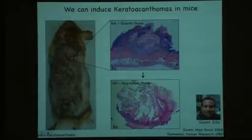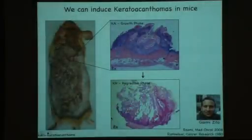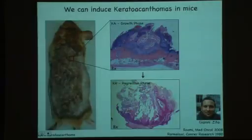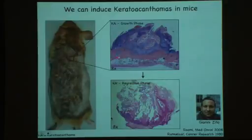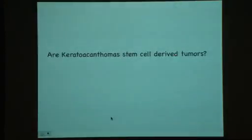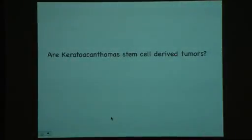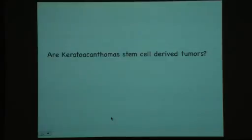Johnny has made a major effort as a postdoc in the lab setting up this cancer model. He uses a carcinogenic model with DMBA to develop keratoacanthomas and confirm that they can self-regress in our hands. Johnny then asked whether keratoacanthomas are stem cell derived, using two approaches: first, asking molecularly whether they retain a stem cell character; and second, by lineage tracing approaches.